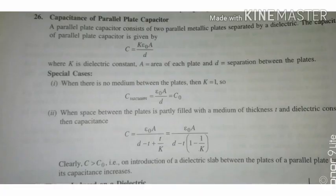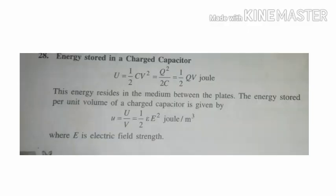Capacitance of a parallel plate capacitor: the expression is C equal to kε₀A divided by d, where k is the dielectric constant. The energy stored in a capacitor is U equal to half CV².